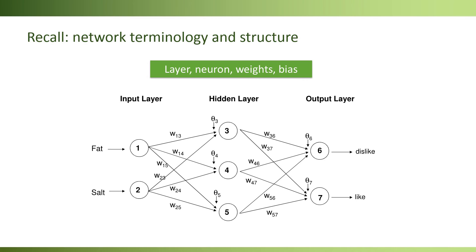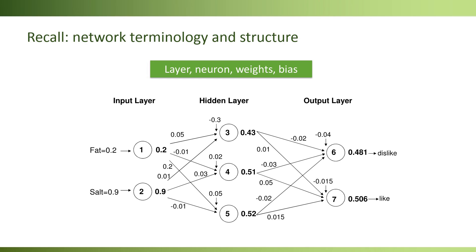The connections between the neurons in different layers are through weights, W-I-J. Then the software uses our training data to estimate these weights. Once we have these estimates, we can use the network to generate predictions. Let's now see how the software estimates the weights.